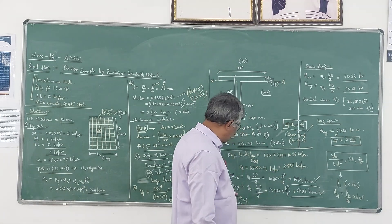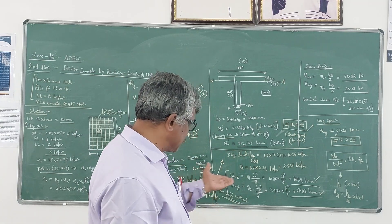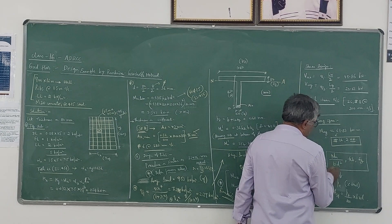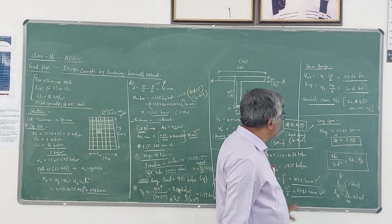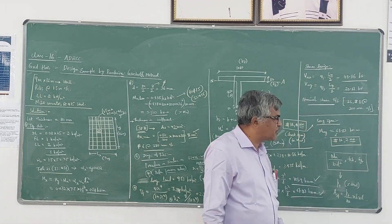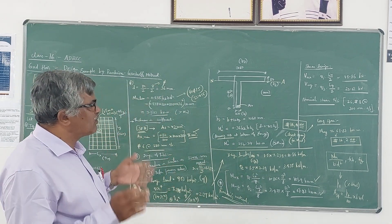Similarly for longer span, we have to design the reinforcement for MUY. It is slightly less, 61.85 kilonewton meter. Same procedure is adopted. From the tables available in the SP16 book, you can get that two numbers of 16 mm diameter bars are enough.